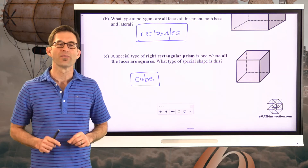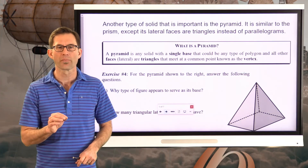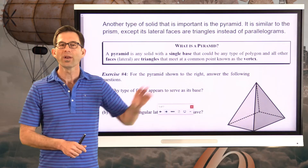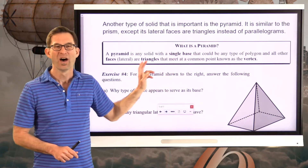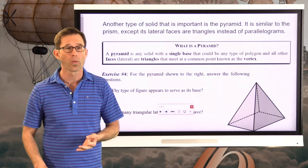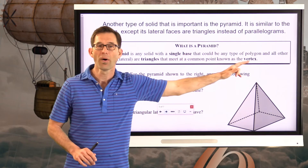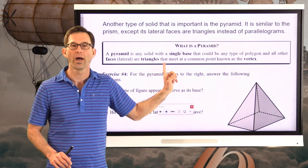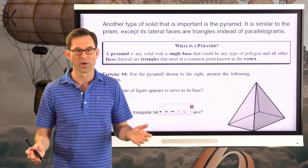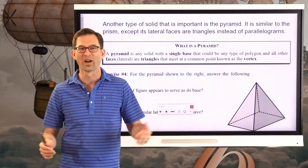Now let's look at the other type of solid: the pyramid. A pyramid is very similar to a prism, except its lateral faces are triangles instead of parallelograms. A pyramid is any solid with a single base — which can be any polygon: a rectangle, triangle, square, pentagon, hexagon, octagon — and all the lateral faces are triangles that meet at a common point known as the vertex. You've seen plenty of pyramids in real life, like the pyramids in Egypt.